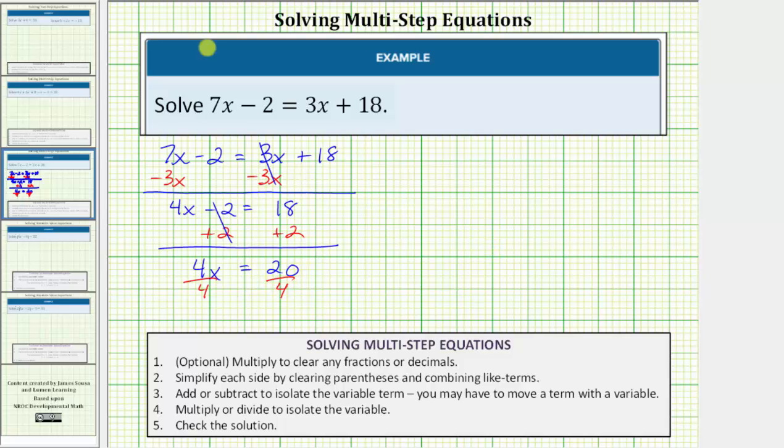And now again, we simplify both sides. On the left side, 4 divided by 4 is equal to 1, 1 times x is x. On the right side, 20 divided by 4 is equal to 5. Our solution is x equals 5.